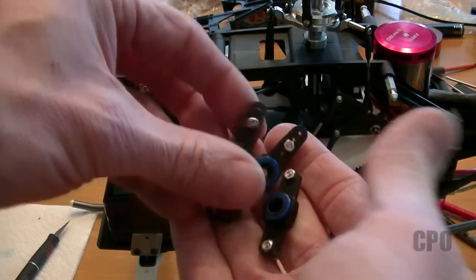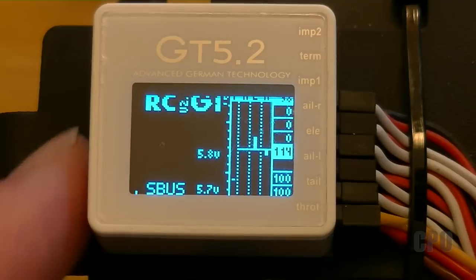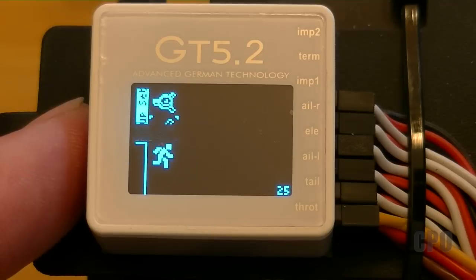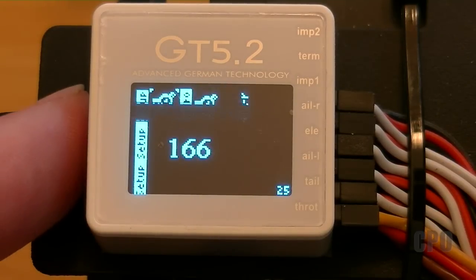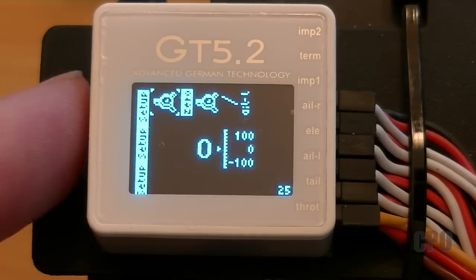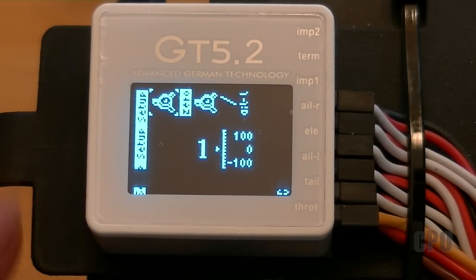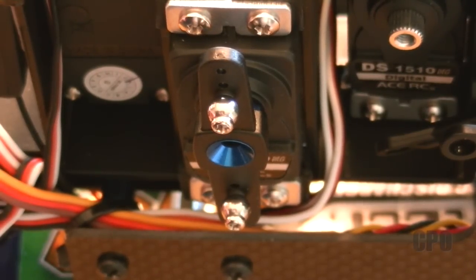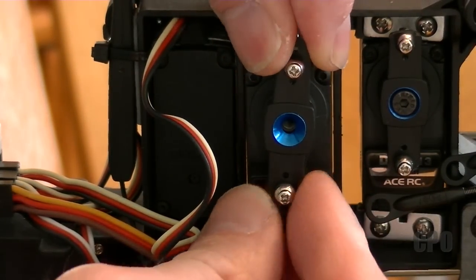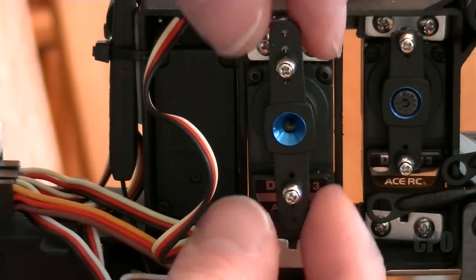Now we need to get our horns on with the servos in the center position. To do that we need to turn on our transmitter, power on the heli, get our GT 5.2 fired up and go into programming mode. We're going to go into the swash menu where we have the sub trim for elevator, aileron left and aileron right. What we want to do is get the horn physically as close to centered as we can and 90 degrees or aligned directly up and down with the servo. As I adjust that sub trim value it moves the servo arm.